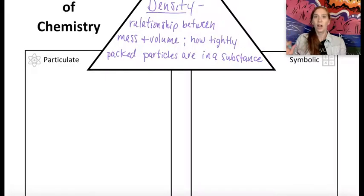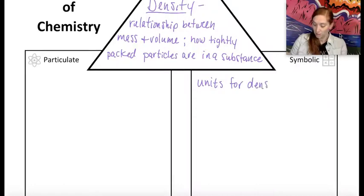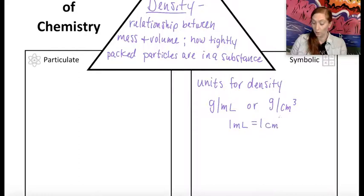So first thing, units for density can vary. And these can be grams per milliliter, or they can be grams per centimeter cubed. Remember that one milliliter and one centimeter cubed are equivalent.